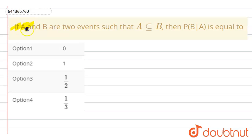Hello student, the question is if A and B are two events such that A is a subset of B, A is equal to or subset of B, then probability of B divided by A is equal to.